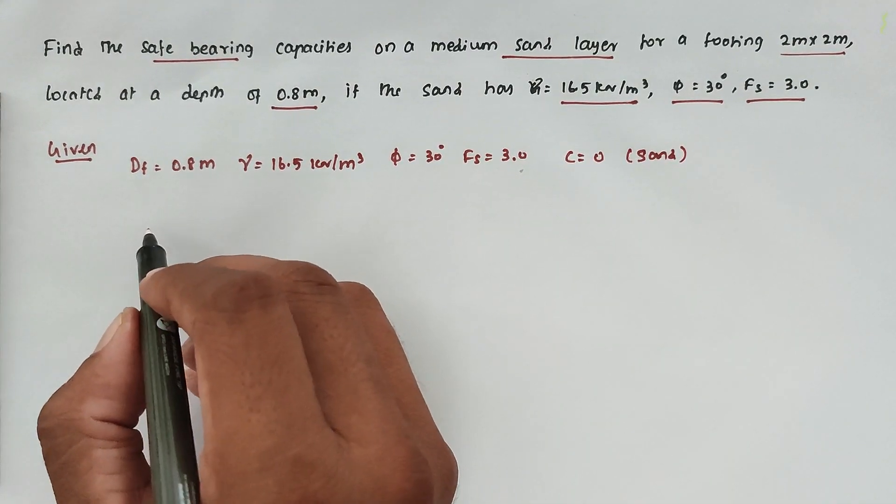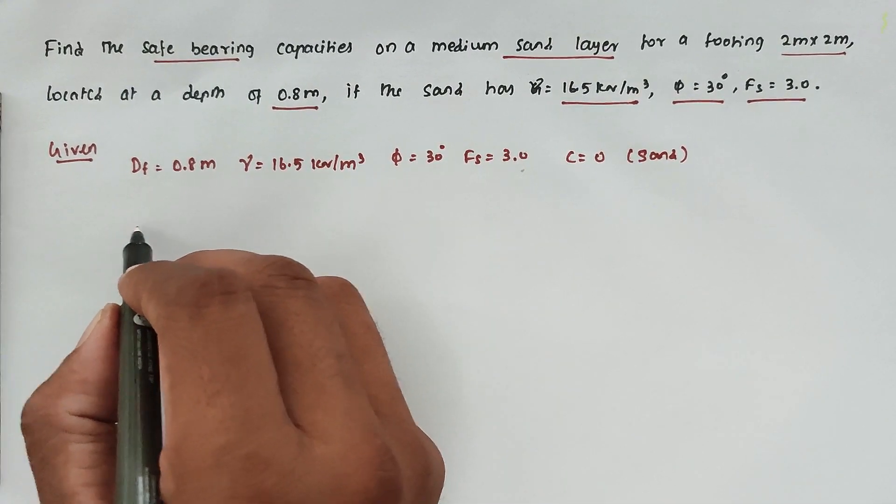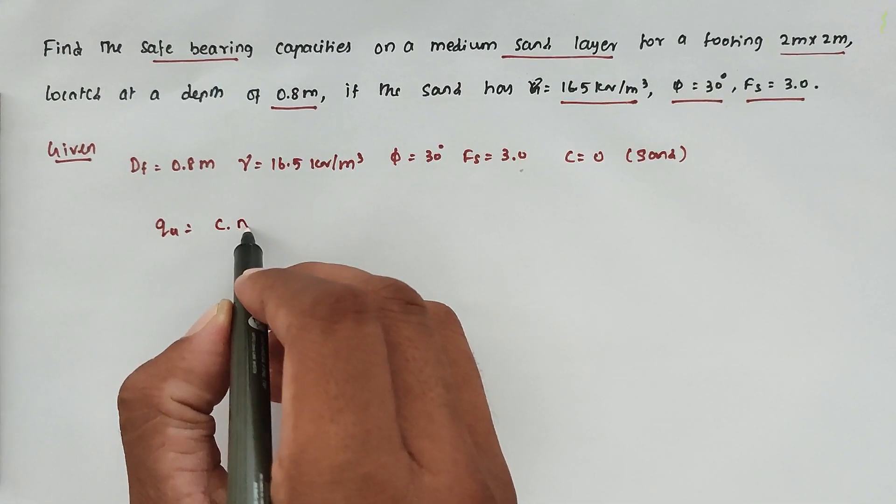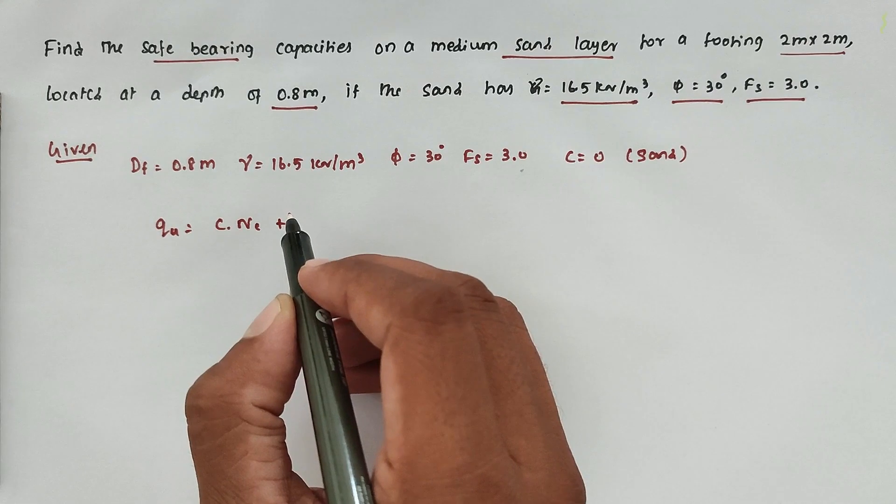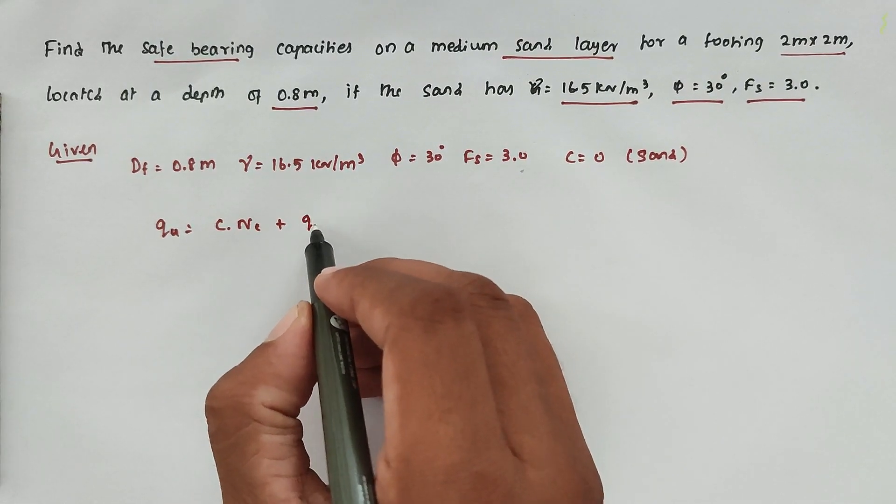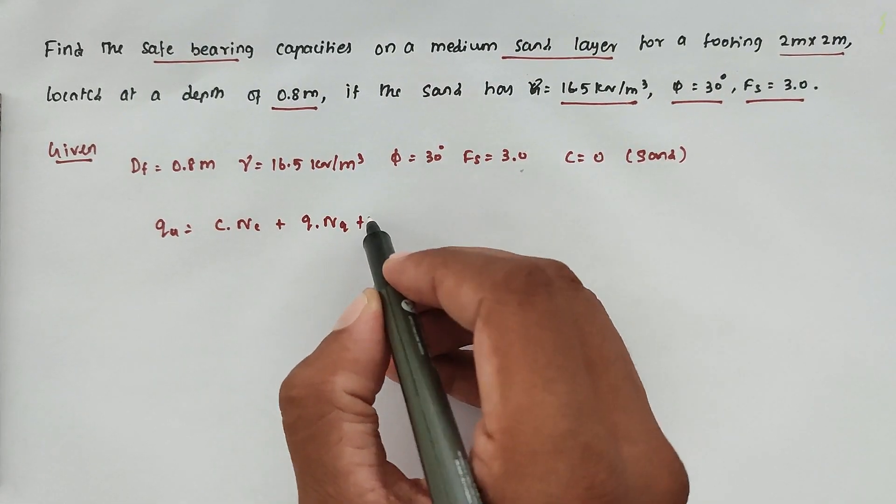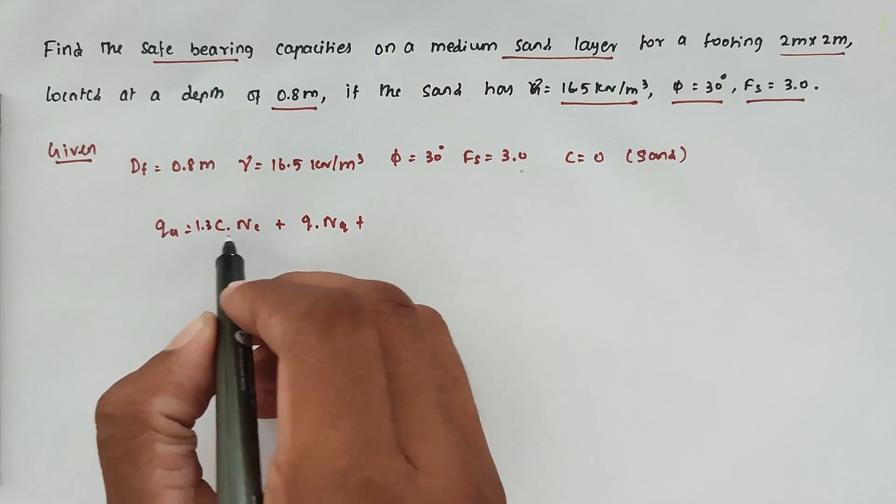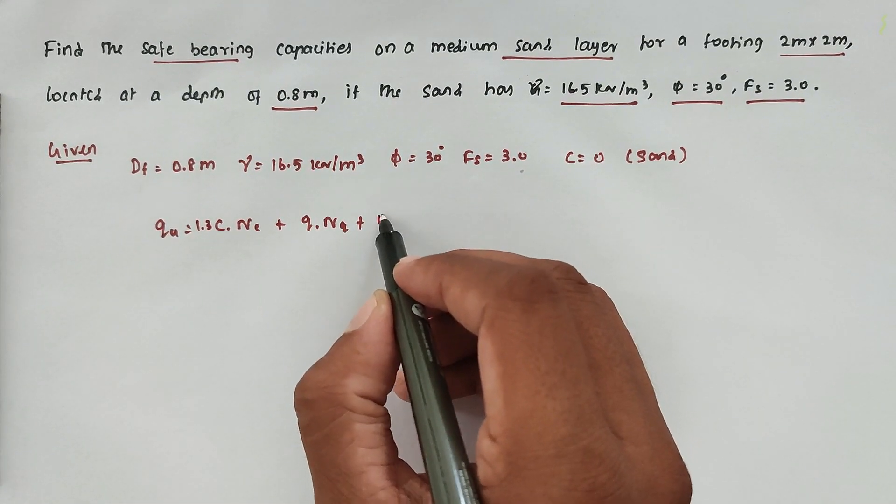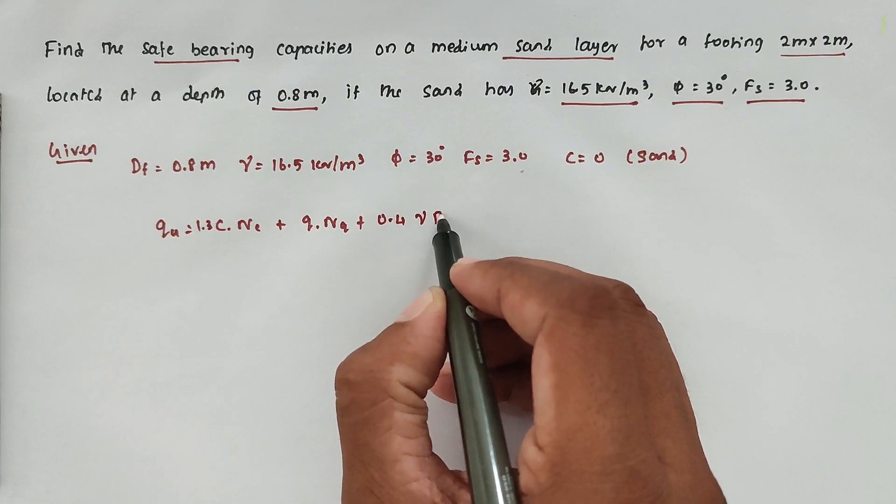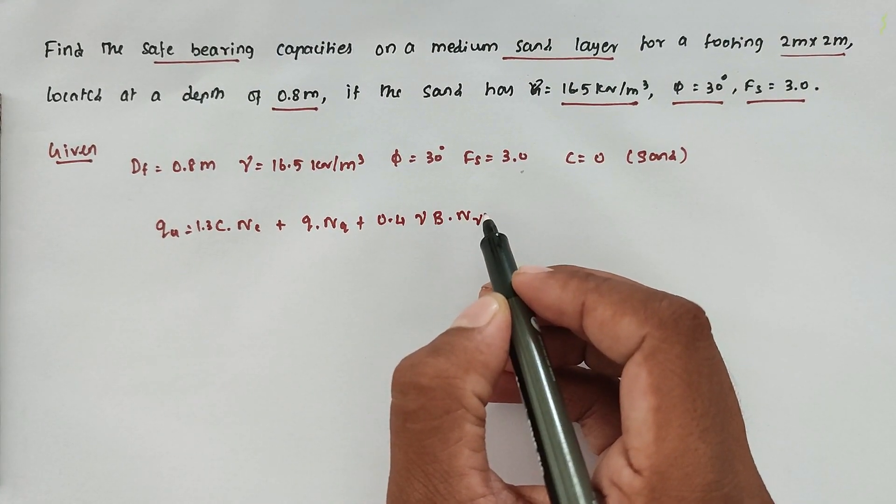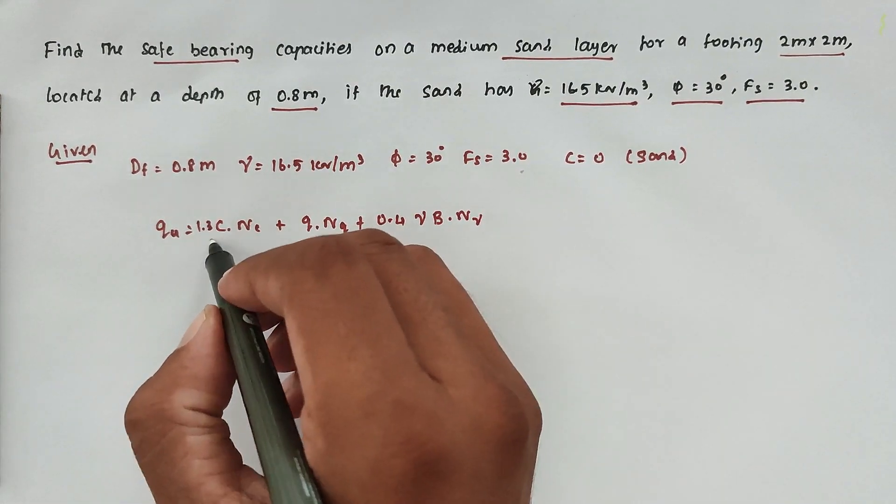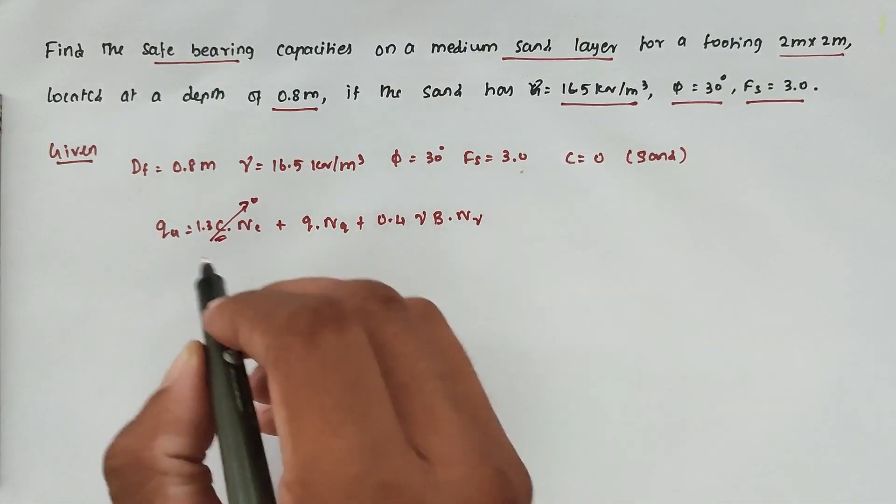The formula: qu = c·Nc + q·Nq + 0.4·γ·b·Nγ. Now this term will be 0 because c = 0.